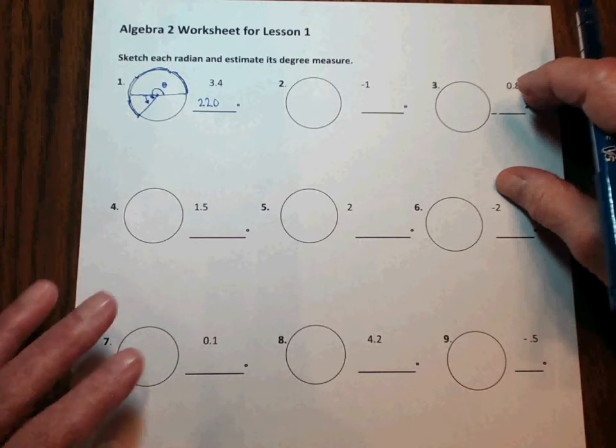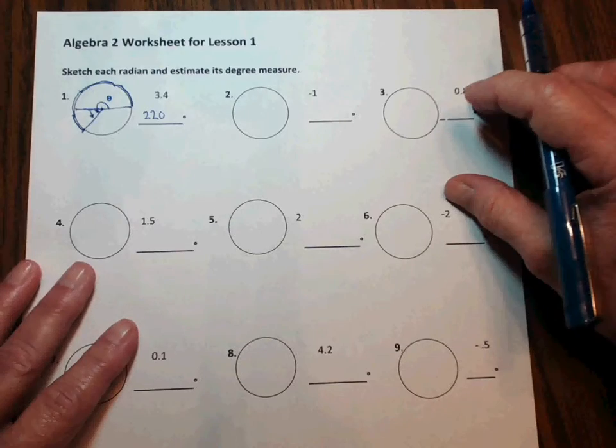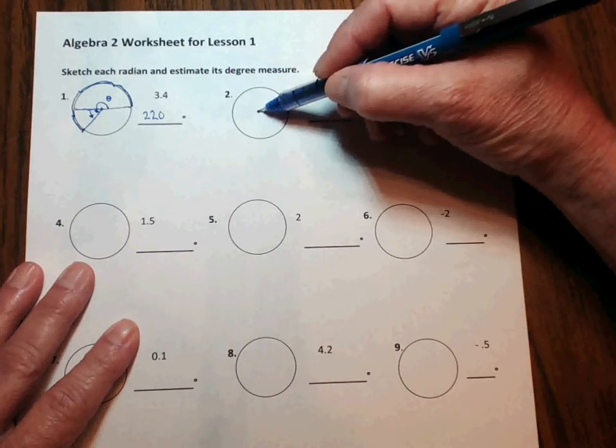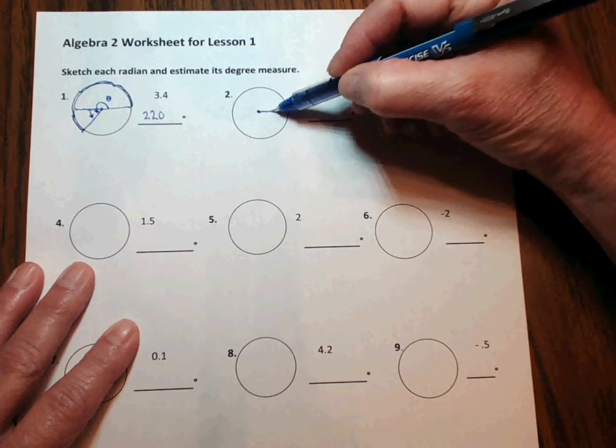Problem two is negative 1 radian. Begin it once again at the center of a circle. Draw a radius to the edge of the circle.